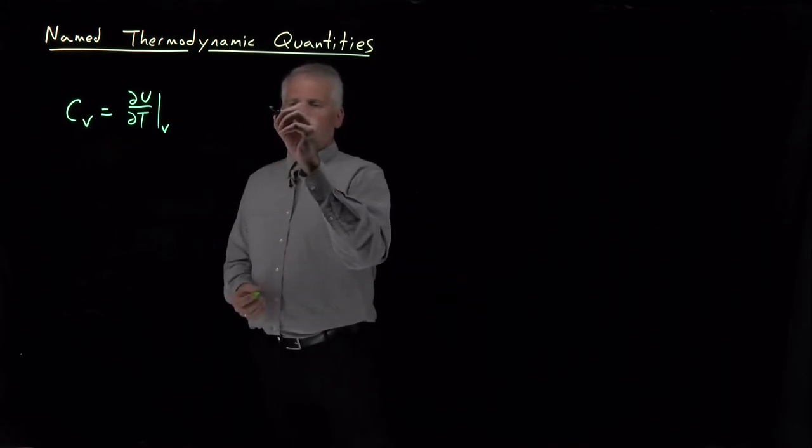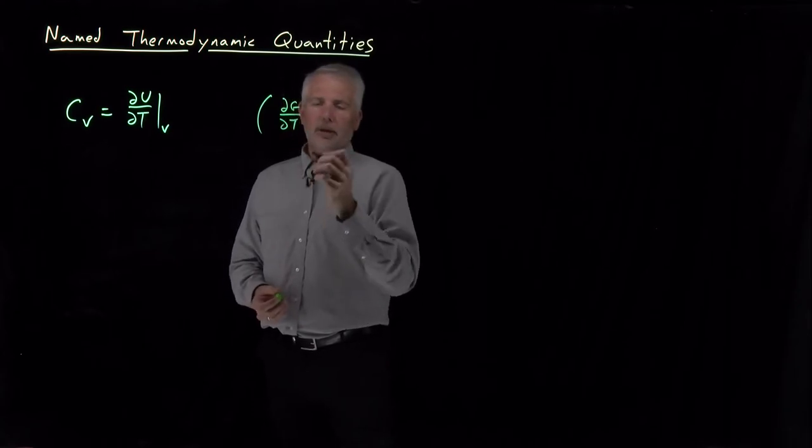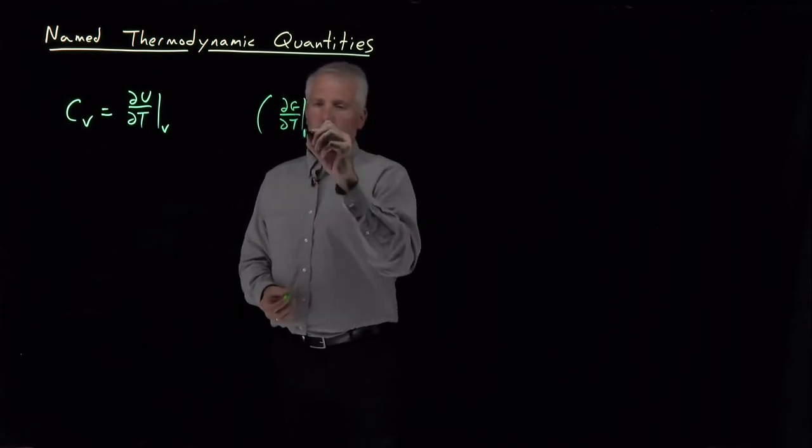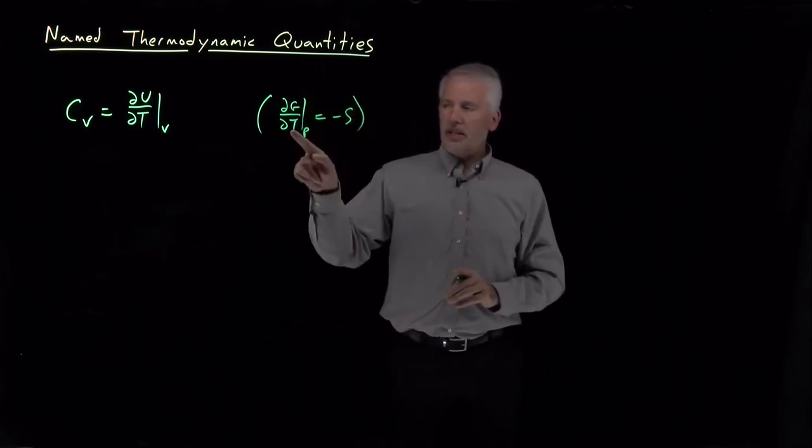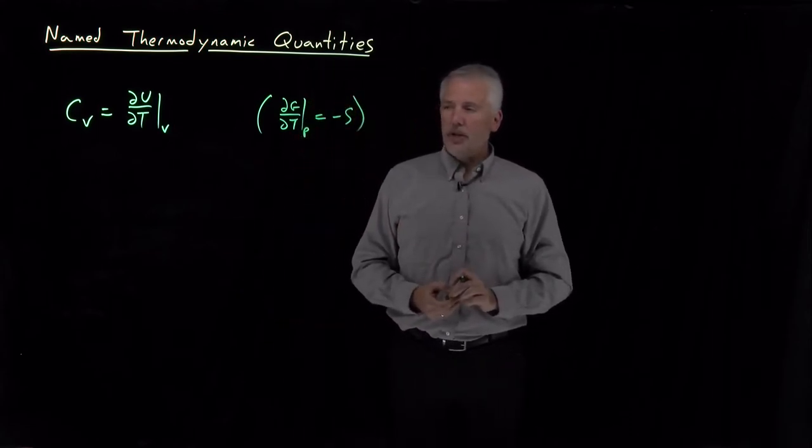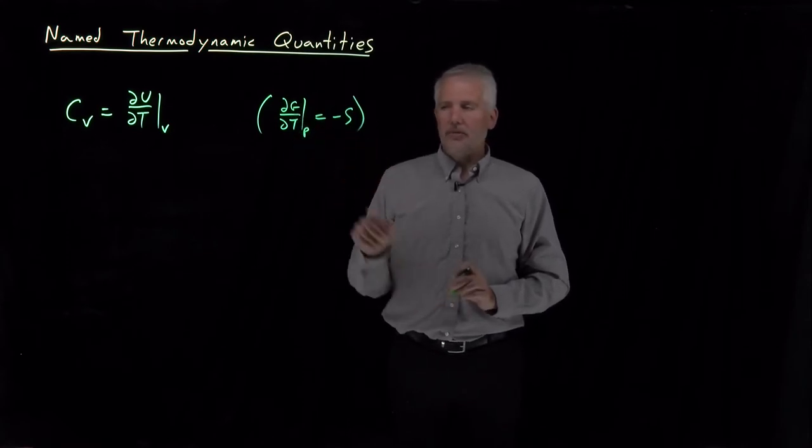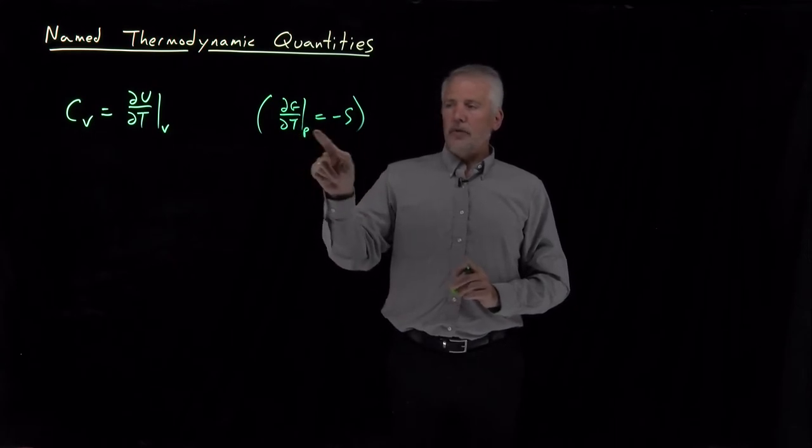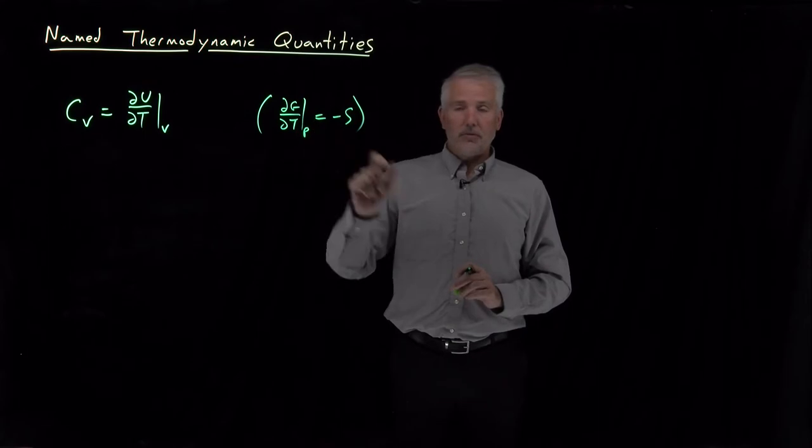That's different in some way from other thermodynamic relationships like this one: dG/dT at constant P we've seen is negative entropy. That actually tells us something deep and fundamental about the connection between these different variables. The fact that this derivative equals negative the entropy came from the fundamental equation for G.